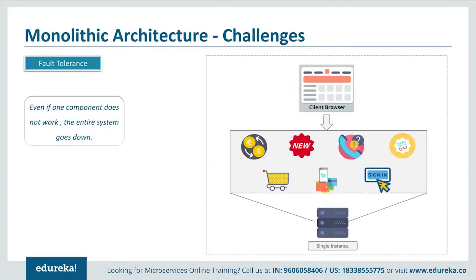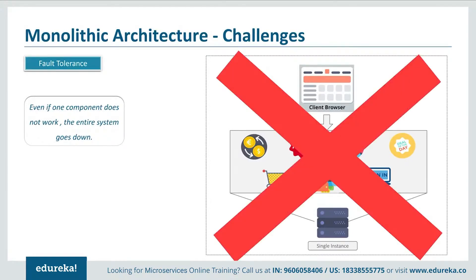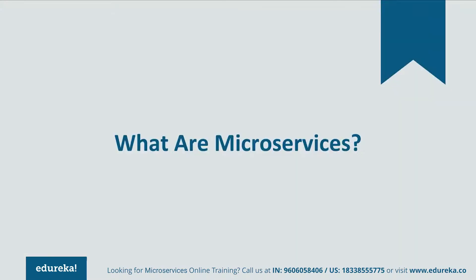Let us now look into the third challenge, which is fault tolerance. Consider your shopping cart application — if even one feature of the application doesn't work, then the entire system goes down. This not only creates a problem for the users, but also for the developers as they have to rebuild it again. So, to avoid these challenges, developers decided to shift from monolithic architecture to microservices.